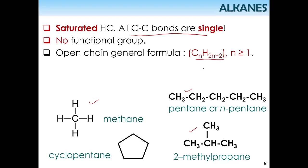So it follows CnH2n+2. Let's take pentane as an example — counting the carbons: 1, 2, 3, 4, 5. There are 5 carbons. When N equals 5, Cn is C5. H equals 2 times N (which is 5), giving 10 plus 2 equals 12. So the formula is C5H12. Counting the hydrogens confirms there are 12, so it is correct for CnH2n+2.